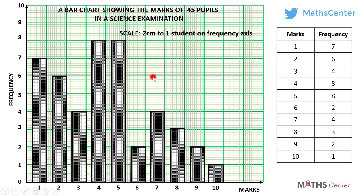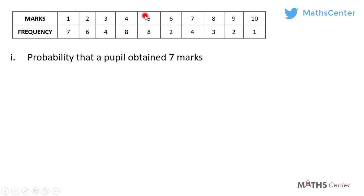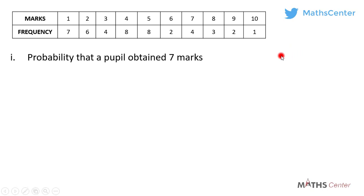Let's move on to the second part of the question that involves probability. We have the data — the marks and their corresponding frequencies. The first part asks: if we select a pupil at random from the class, what is the probability that the pupil obtained a mark of 7? From our study of probability, the probability that an event will occur equals the number of members in the event divided by the number of members in the sample space.